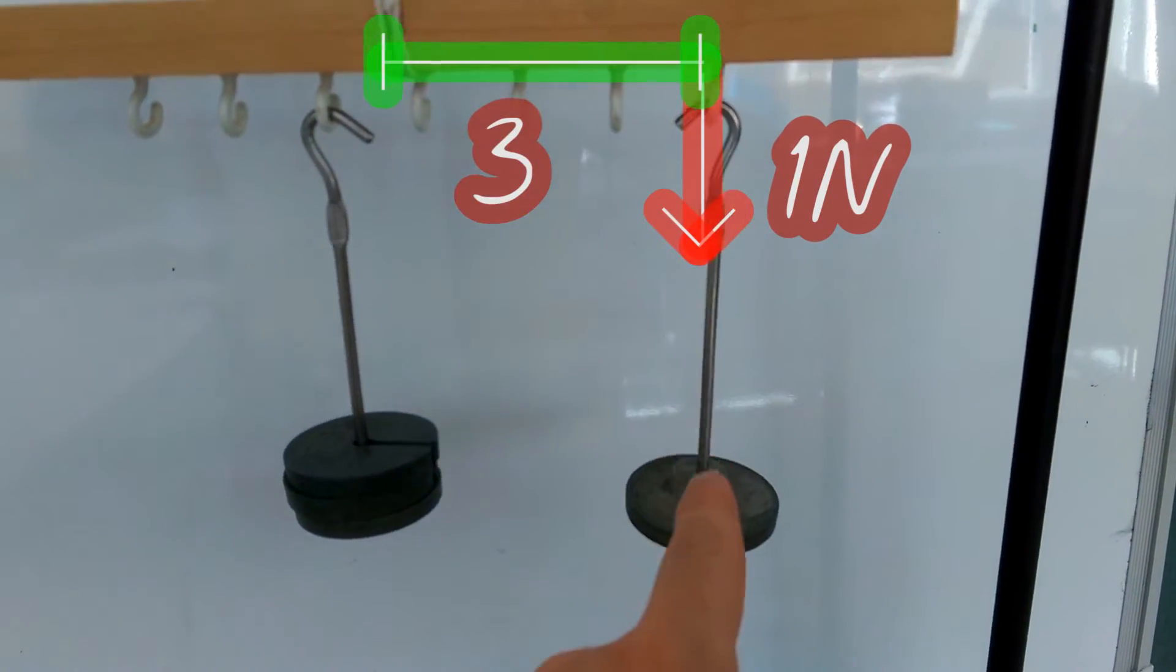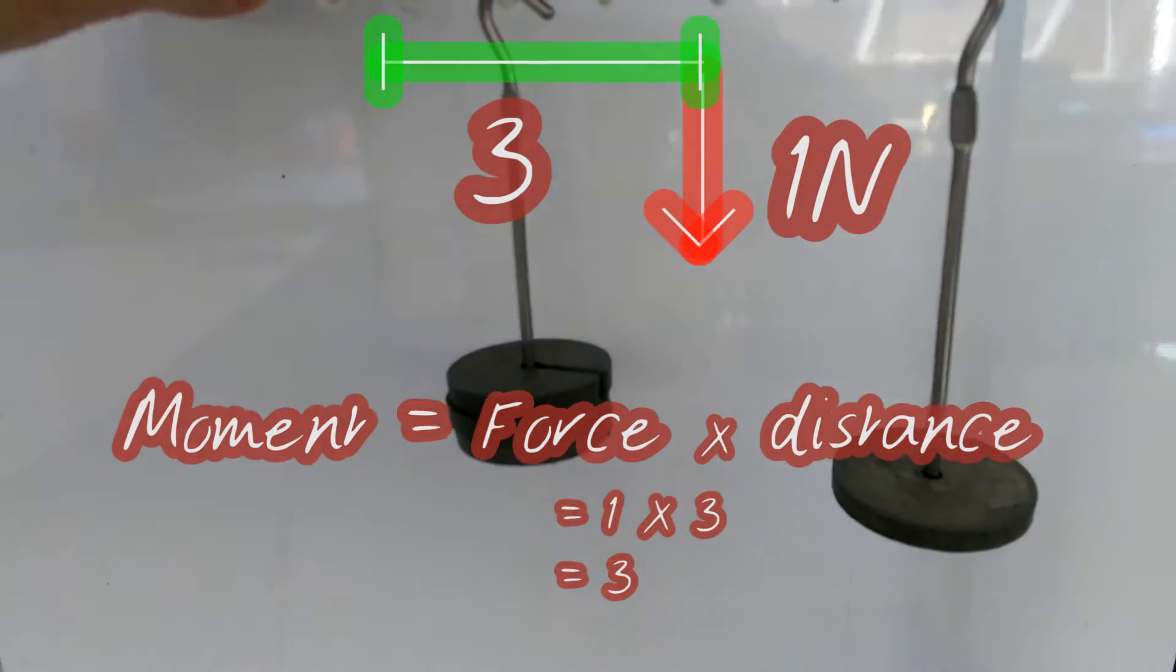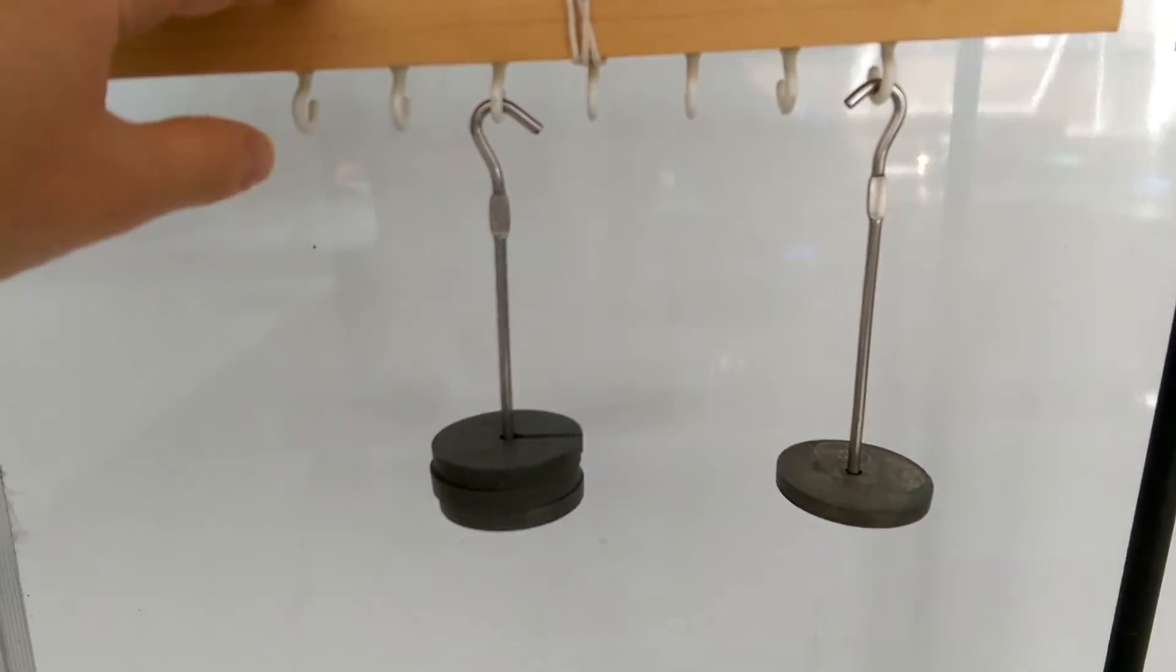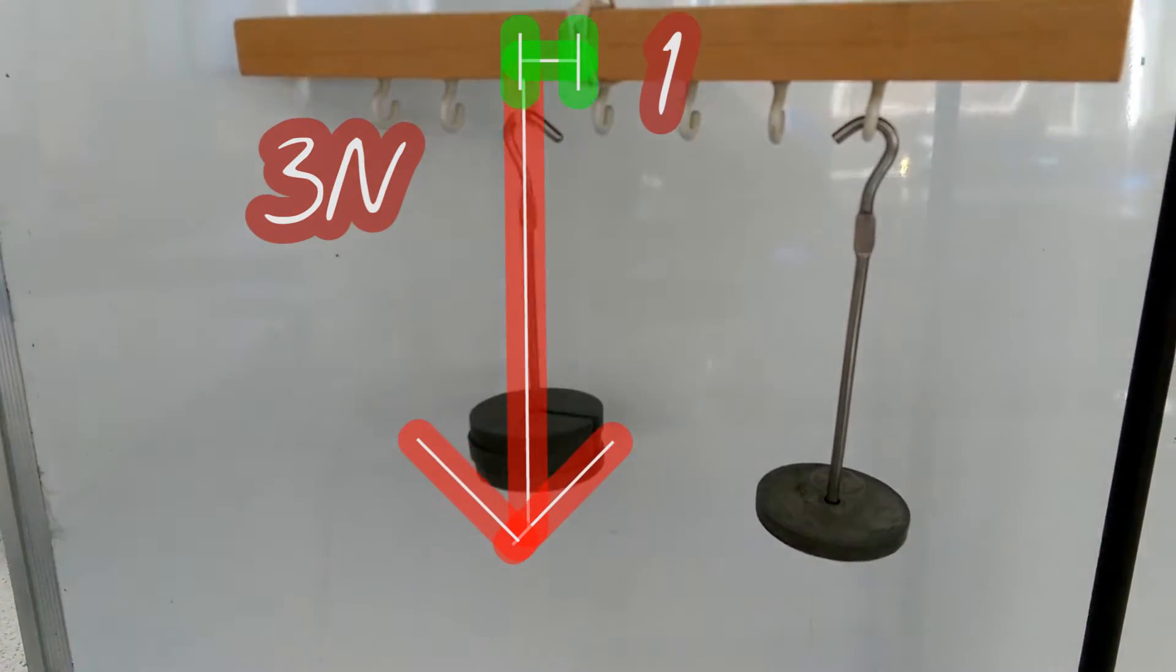So on this side our moment is one times three, it's three. On this other side I have three newtons of weight, and I have it on the first rung. So our moment is also three.